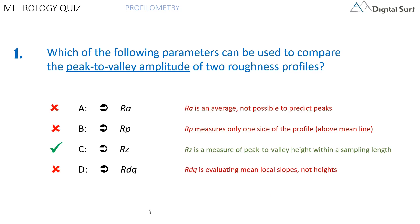The correct answer is C, RZ. The RZ parameter evaluates the peak to valley height within a sample length. RA is an average of all points so it cannot assess the peak to valley height. RP characterizes only peaks above the mean line but tells nothing on valley depths. RDQ characterizes slopes so it is not related to height.